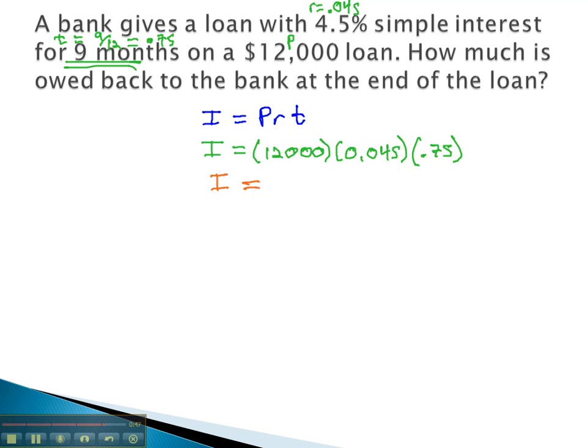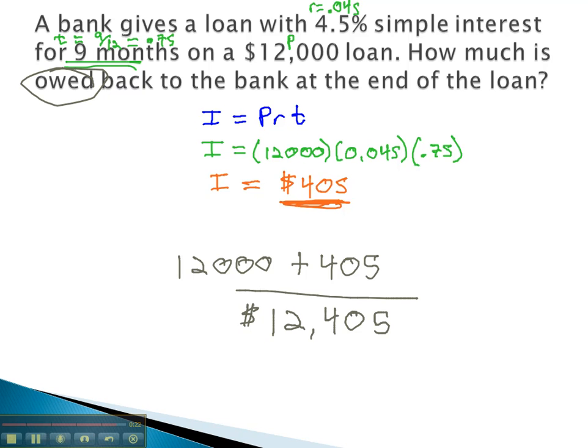12,000 times 0.045 times 0.75. We have earned in this account $405 in interest. How much is owed back to the bank? Well, you've got to pay back the $12,000. You also have to pay the $405 in interest. So how much is owed the bank at the end of 9 months is $12,405.